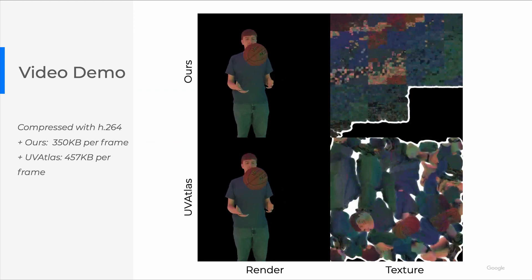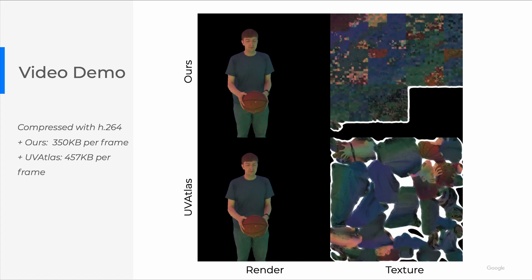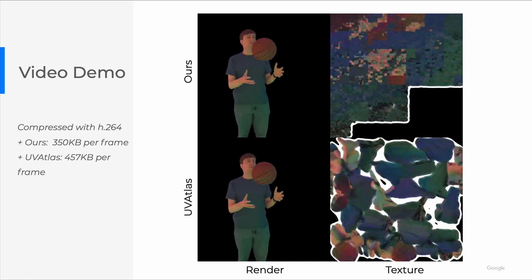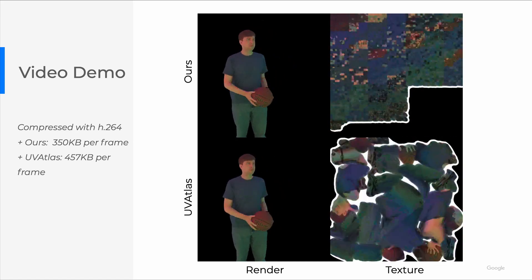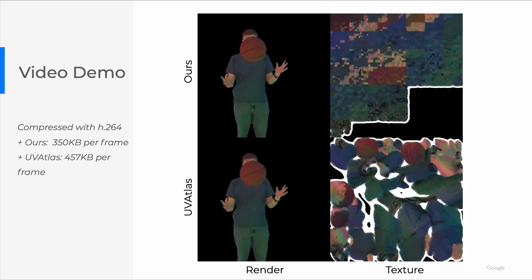In this video, you can see our texture maps are more temporally consistent, and have similar rendering quality with UV Atlas. Because of this, when compressed with H264, our video is much smaller. Thank you for your attention.